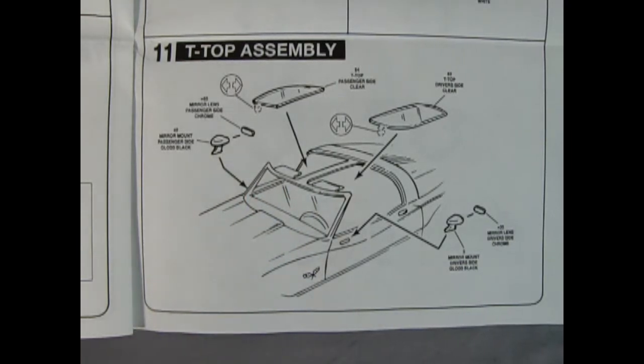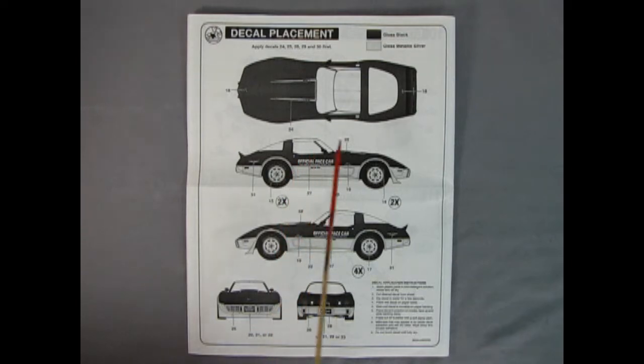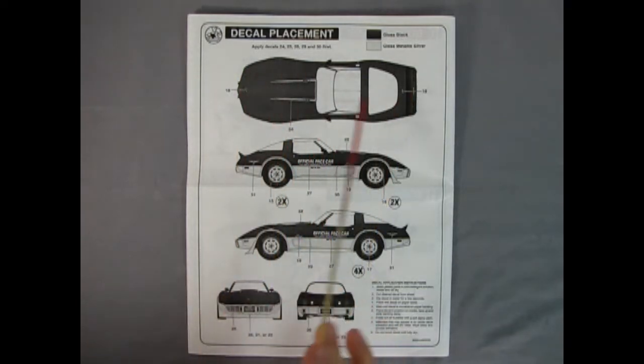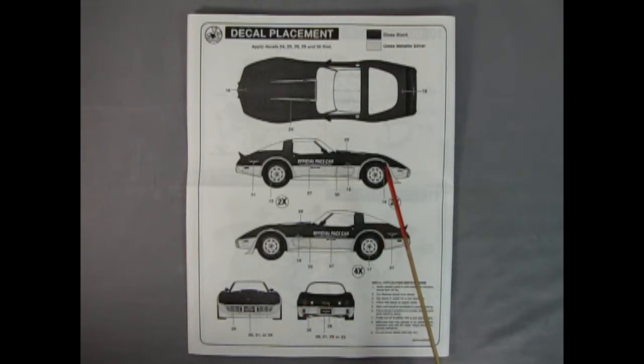Our final panel shows our completed model with the decal placement. Now unfortunately I do not have the decals for this kit because it was a secondhand model but I can always build it as a stock 1978 Corvette.